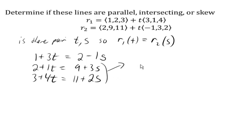And I could take the first equation and solve it for t. So t equals, subtracting 2 from both sides, 7 plus 3s. And then substituting that into the second equation, 3 plus 4, now we're going to replace t with 7 plus 3s, equals 11 plus 2s.